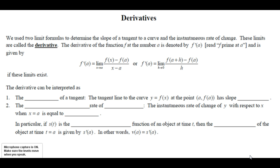The derivative of the function f at the number a is denoted by f prime of a, and is given by the definition: f prime of a is the limit as x approaches a of f(x) minus f(a) over x minus a, or f prime of a is the limit as h approaches 0 of f(a+h) minus f(a) over h, if these limits exist.